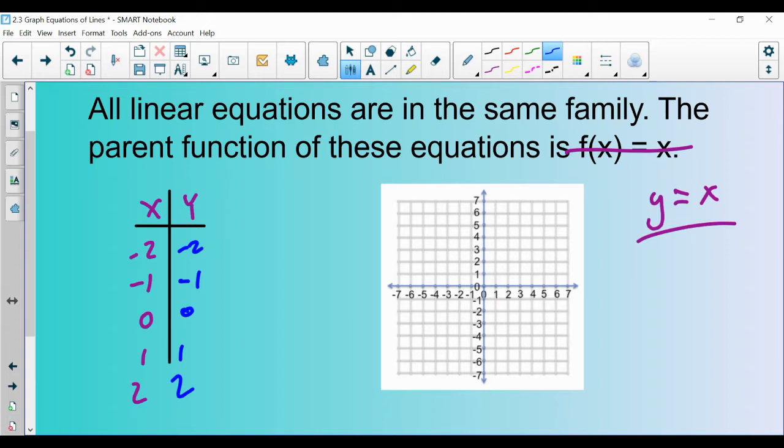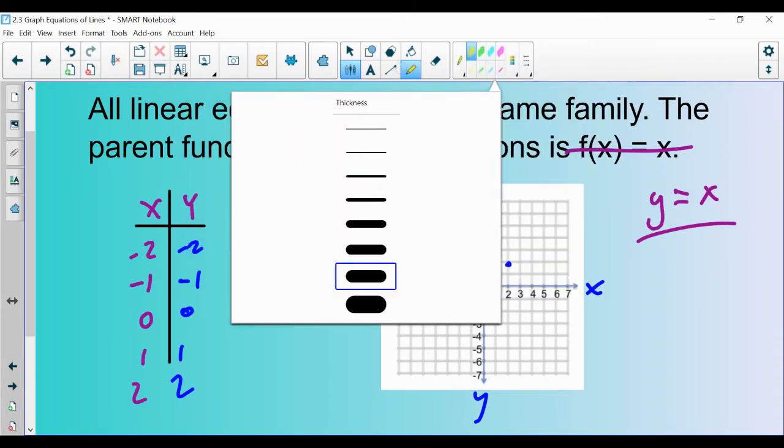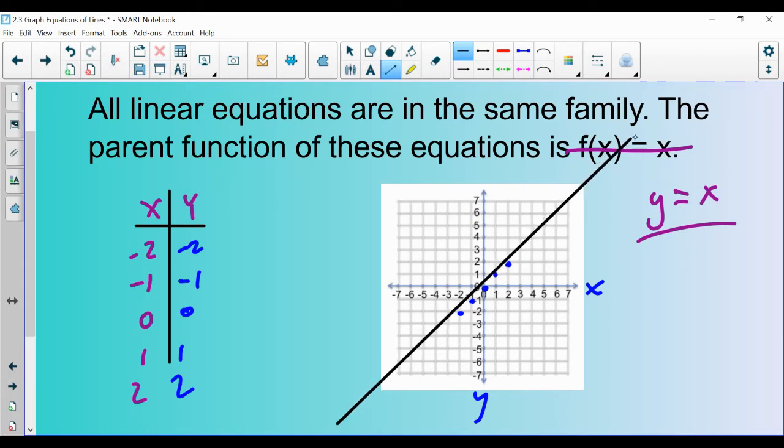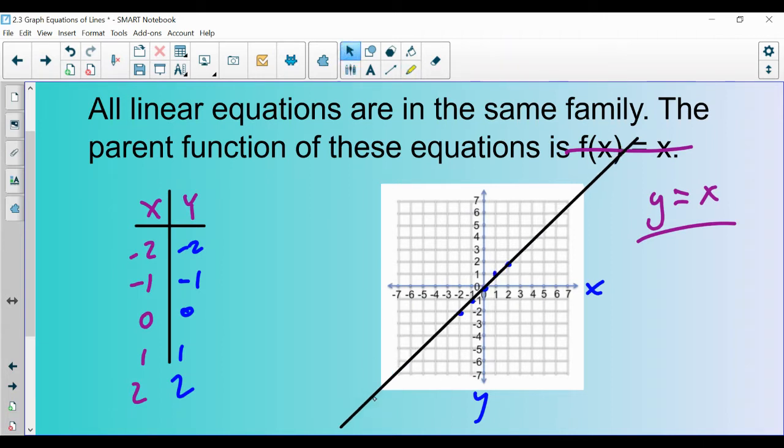The input and the output are going to match. We should be good at graphing points. Negative 2, negative 2 would be here. x first, then y. Negative 1, negative 1, (0,0), (1,1), (2,2). As described earlier, we're going to get this perfect diagonal line. So that is y=x, the most basic function in the family.